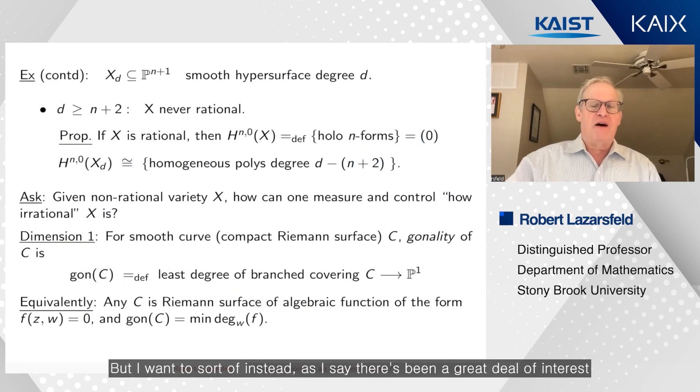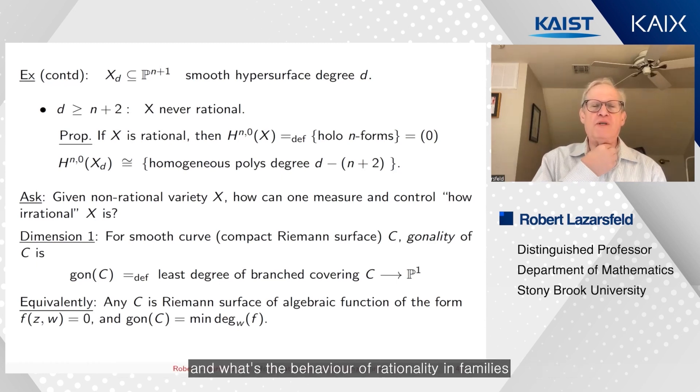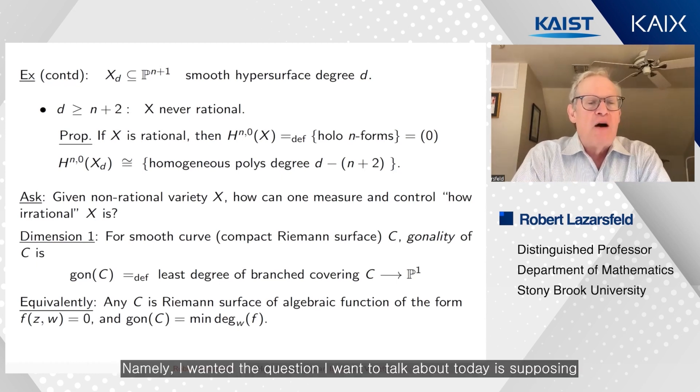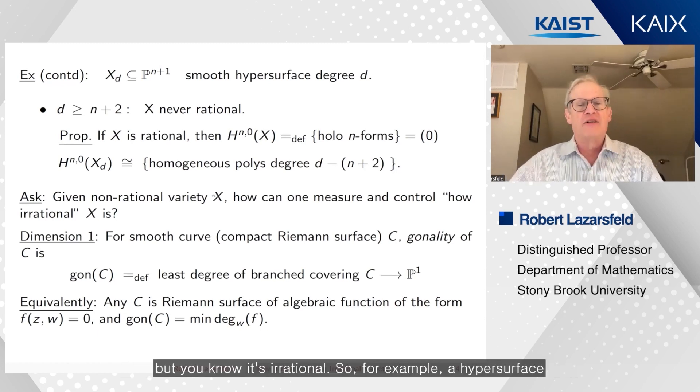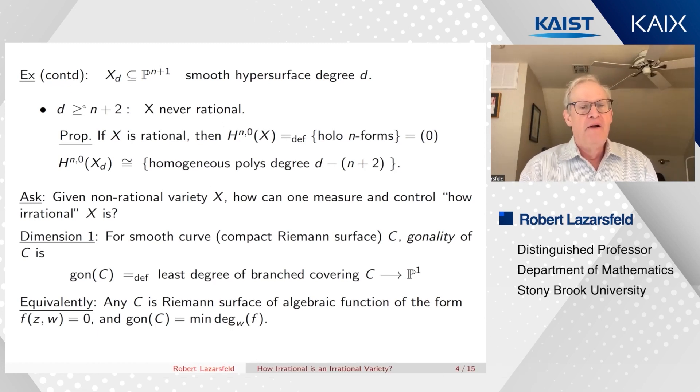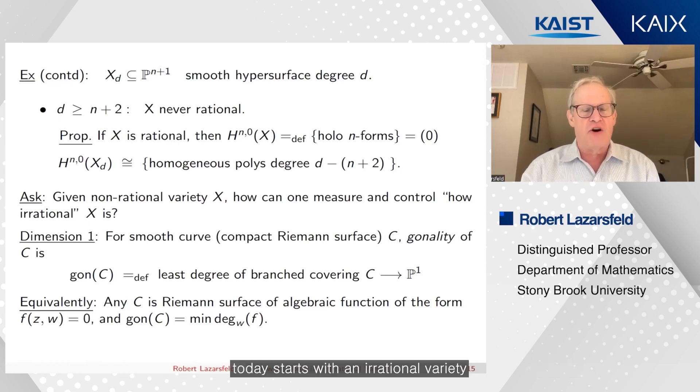But the topic I want to talk about today is kind of complementary to that. Namely, the question I want to talk about today is supposing you have a variety that's non-rational, that you know it's irrational. So for example, a hypersurface of degree at least n+2.